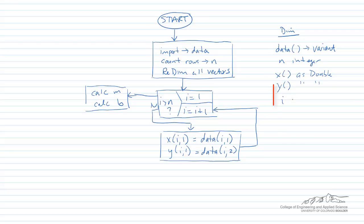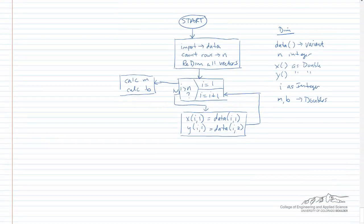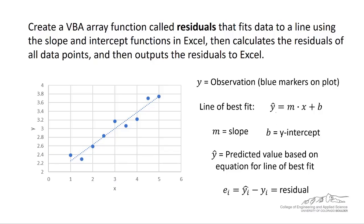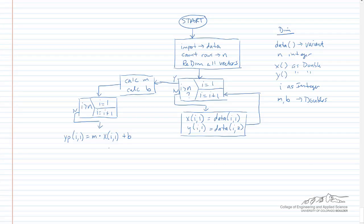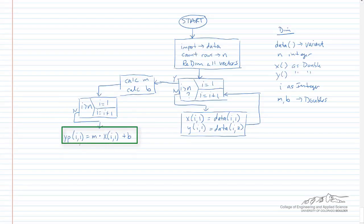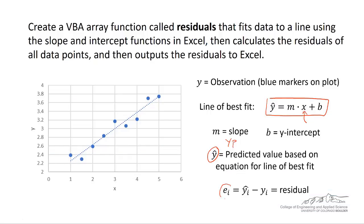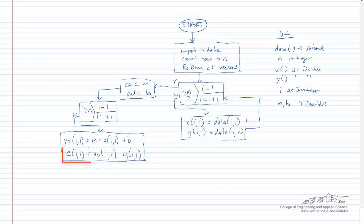We're going to use the Excel functions slope and intercept to calculate m and b. We have to dim a couple more things. After we calculate the slope and intercept, we can go back to our equation. We're going to use the line of best fit to calculate a new vector — I'm going to call it yp for predictions. We're going to enter into a for loop, iterate through all the items, and create the yp vector. The next step is to create a vector of the residuals, defined as e — that's just the difference between yp and y. Then all we do is output, and end.